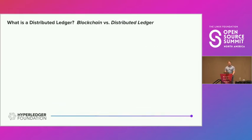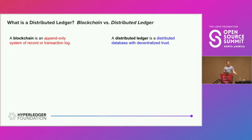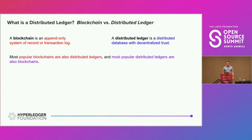I'm also going to define distributed ledger. In the blockchain community, there's a big language issue around what's a blockchain versus a ledger. I define a blockchain as an append-only system of record or transaction log — the immutability guarantee you're used to in Bitcoin. A distributed ledger is a distributed database with decentralized trust. Most popular blockchains are also distributed ledgers, so I tend to use these terms interchangeably.